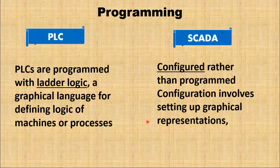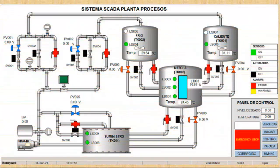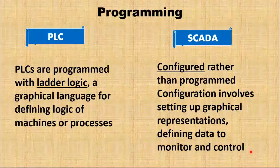SCADA systems consist of HMI — Human Machine Interface — programming, referred to as HMI development, which is about designing the layout of the whole plant rather than writing code in the traditional sense. The software is typically configured rather than programmed. Configuration involves setting up graphical representations of the industrial processes, defining data points to be monitored, and establishing control strategies.